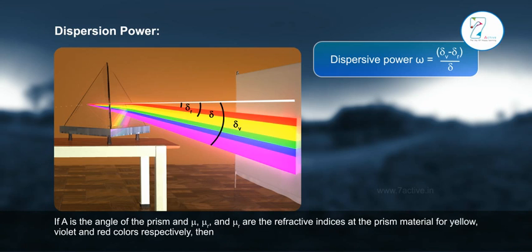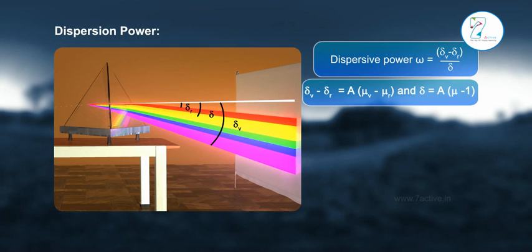If A is the angle of the prism and μ, μᵥ, and μᵣ are the refractive indices of the prism material for yellow, violet, and red colors respectively, then δᵥ - δᵣ = A(μᵥ - μᵣ) and δ = A(μ - 1).